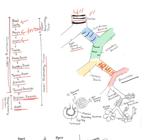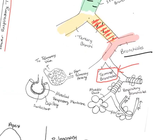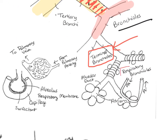The bronchioles continue to divide and get smaller, and the next division is called terminal bronchioles — marking the end of the conducting pathway. The terminal bronchioles then branch off and become respiratory bronchioles. The respiratory bronchioles have little alveoli attached to them and lead into an alveolar duct, which leads into an even bigger cluster of alveoli.